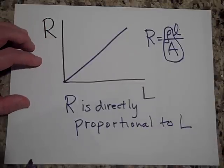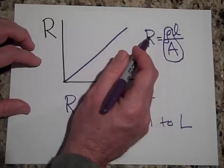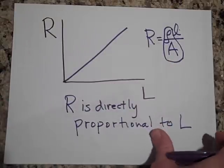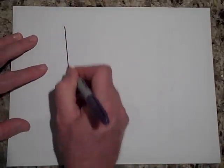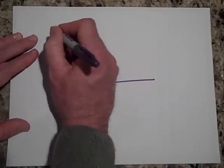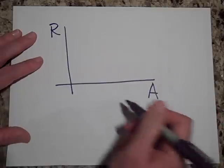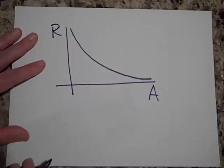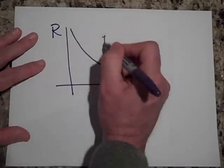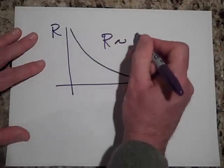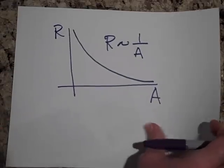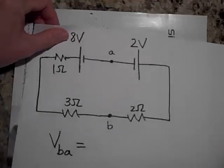Whereas if I did cross-sectional area, R is inversely proportional to A. So if I did cross-sectional area, R and cross-sectional area, then a 1 over X graph looks like that. That is, R is inversely proportional to A, the cross-sectional area. Okay, all right, moving on.